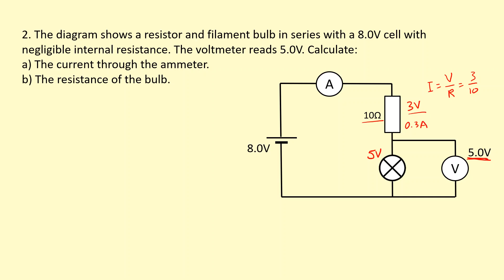The resistor is in series with the bulb, so whatever current goes through the resistor must go through the bulb — none of it goes down the voltmeter. So the bulb also has 0.3 amps through it. Now I know two things about the bulb, so I can work out the resistance: V over I equals 5 divided by 0.3 amps, giving 16.7 ohms.